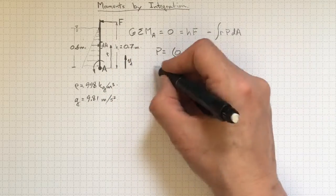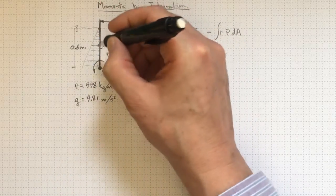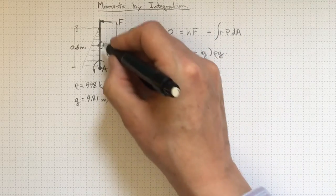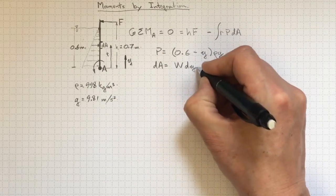I'll need to know dA. Well, it'll depend on how wide this gate is into the page. So it'll be W times, well, that dimension there, that change in height. That's just dY.